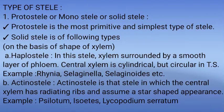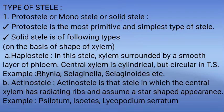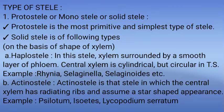Types of Stele: 1. Proto-Stele or Mono-Stele or Solid Stele. Proto-Stele is the most primitive and simplest type of stele. Solid Stele is of the following types on the basis of shape of xylem: 1. Haplostele — In this stele, xylem is surrounded by a smooth layer of phloem; central xylem is cylindrical but circular in transverse section. Example: Rhynia, Selaginella, Selaginelloids, etc.